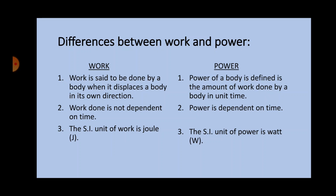Now we will see the differences between work and power. Work is said to be done by a body when it displaces a body in its own direction, while power is defined as the amount of work done by a body in unit time. Work done is not dependent on time, whereas power is dependent on time. The SI unit of work is Joule, and the SI unit of power is Watt.